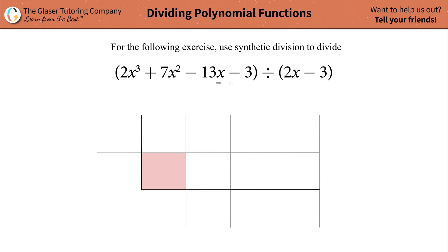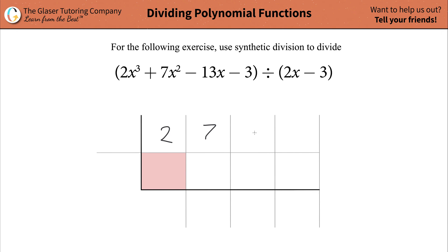So you've got x cubed, x squared, x, and then no x. If you were missing a term — let's say you had x cubed, x squared, and then you don't have an x term — you must write it in. What you would do is add in plus 0x; the coefficient of the x term is 0 in that case. Just plug in your coefficients in order: 2, 7, negative 13, and then negative 3.